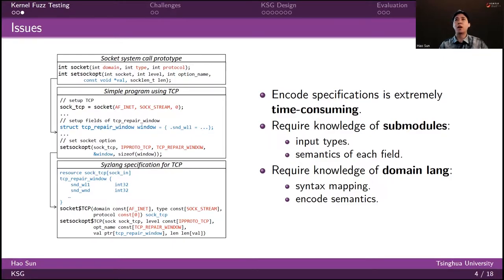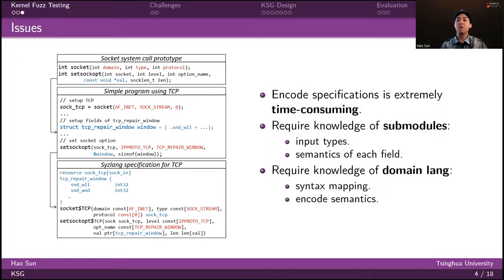Then, even though we understand the input type of each submodule, we need to figure out the semantics of each input field in order to encode a high-quality specification. And finally, after obtaining all the required domain knowledge of the kernel submodules, we need to understand how to encode this information in the domain language used by the kernel fuzzer. The bottom part of the figure shows a very simple example of a long specification for TCP system calls. To write such a specification, we need to perform syntactic mapping from the original C definition to the Syzlang definition, and also encode semantics with Syzlang types — for example, encoding a field as a check-time type. This presents significant manual effort.